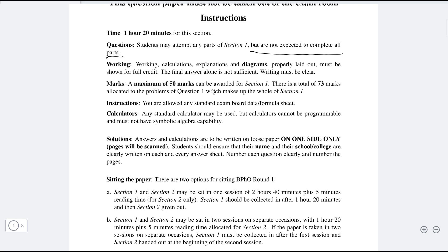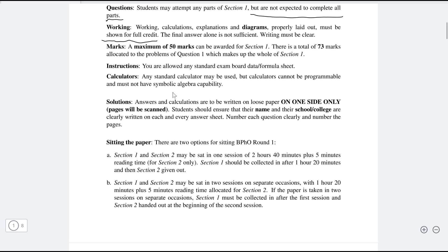Working, calculations, explanations, and diagrams properly laid out must be shown for full credit. In fact, a lot of times in Physics Olympiads, creative solutions may get some points, so please make sure to include all of your working out. You're going to be awarded a maximum of 50 marks for section one, even though there's in total 73 marks. This can vary from year to year. You are allowed any standard exam board data and formula sheet. You can use a calculator, as long as it's not programmable or uses symbolic algebra.